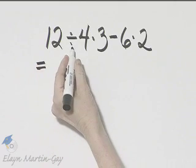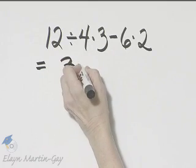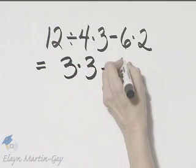So first I have division. 12 divided by 4 is 3. And I'll write down everything else I have.